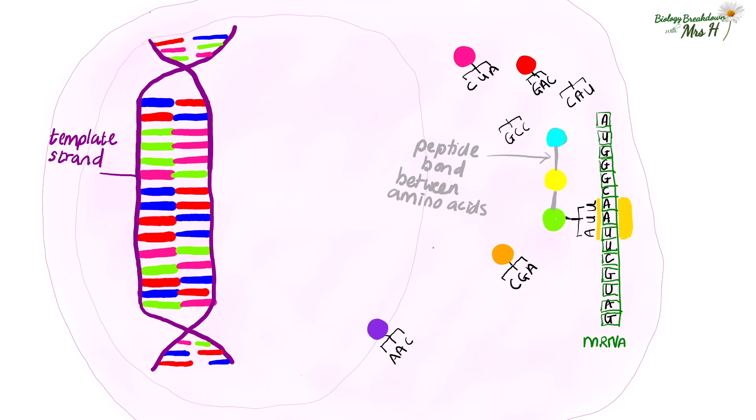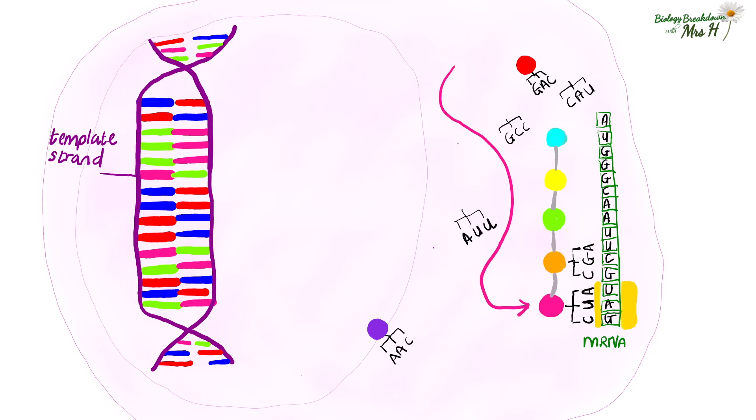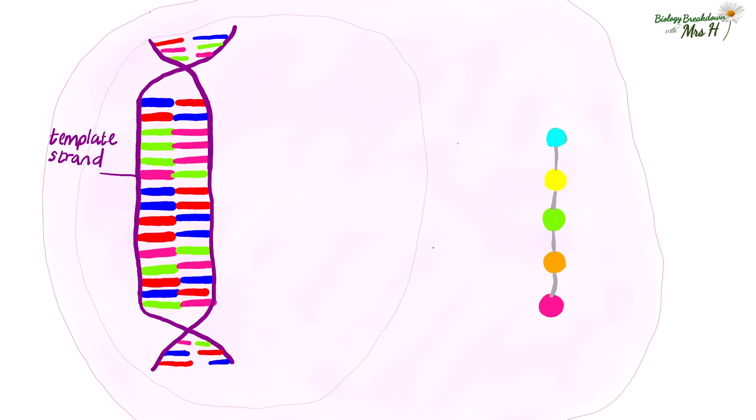The ribosome continues to move along the mRNA and the complementary pairing between the codons or the triplets on the mRNA and the anticodon the triplets on the tRNA continue until all the amino acids have been assembled and joined together to make a protein. Making a protein from the mRNA code is called translation.